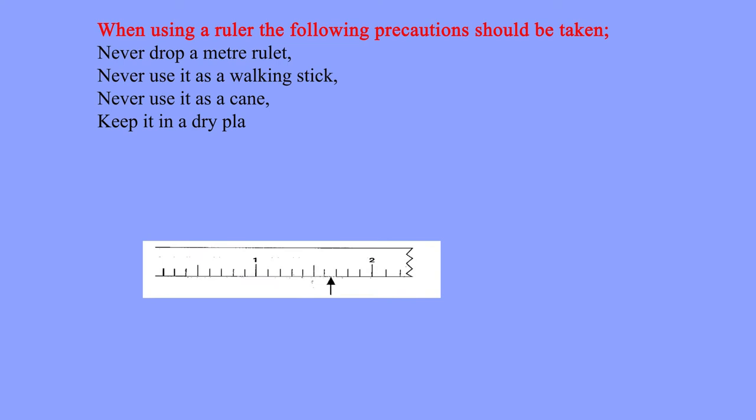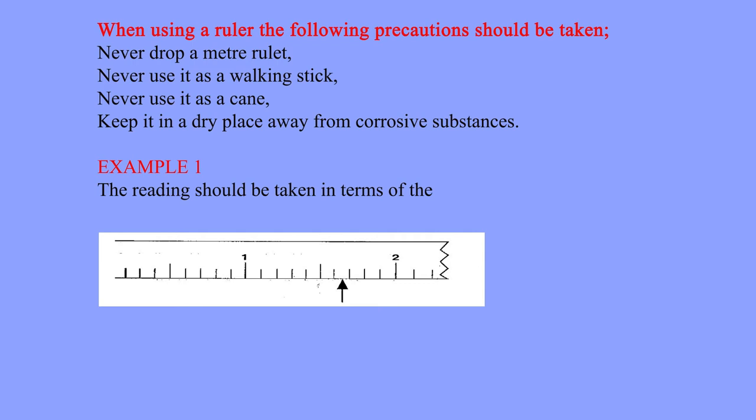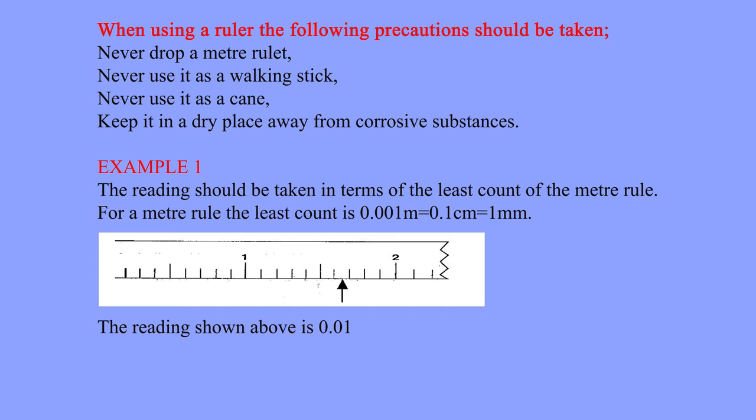Example 1. The reading should be taken in terms of the least count of the meter rule. For a meter rule the least count is 0.001 meters equals 0.1 centimeters equals 1mm. The reading shown above is 0.0165 meters equals 1.65 centimeters equals 16.5 millimeters.